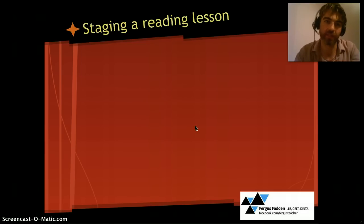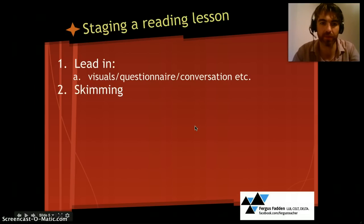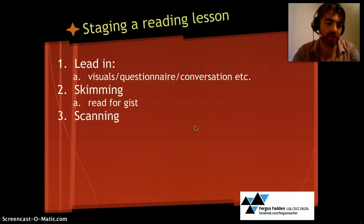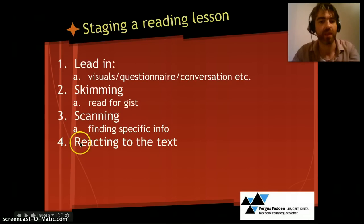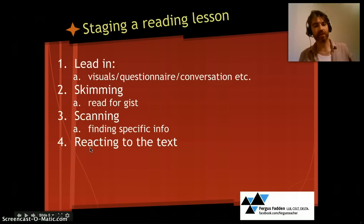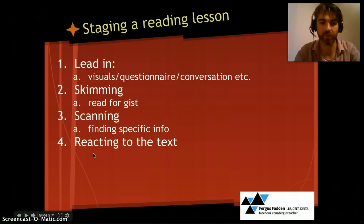Finally, staging a reading lesson. First, a lead-in where you generate interest and activate schemata — using visuals, questionnaires, conversation, and the other ideas we've discussed. Then ask students to skim to get a general idea of the text. After that, they read for more detail by scanning for specific information. After that, it's a nice idea to let students react to the text — what did they feel and think about it? This helps them personalize the experience and make the skills development more meaningful and useful.